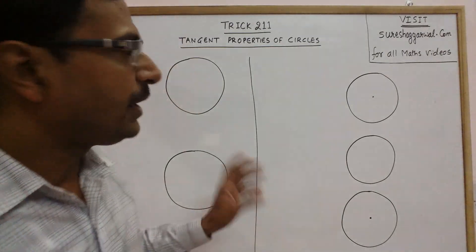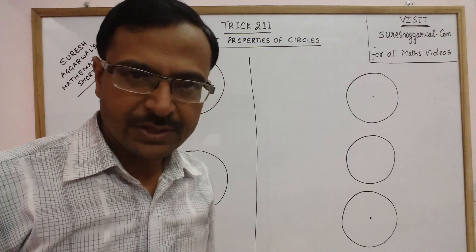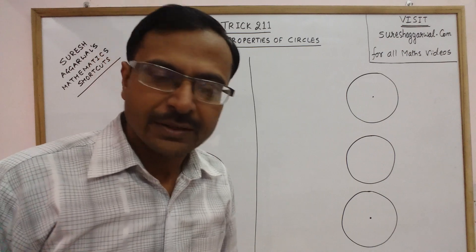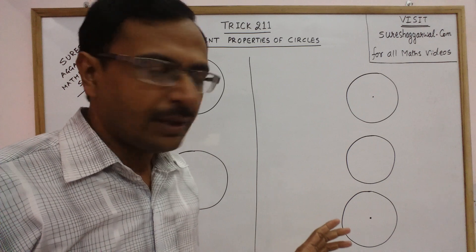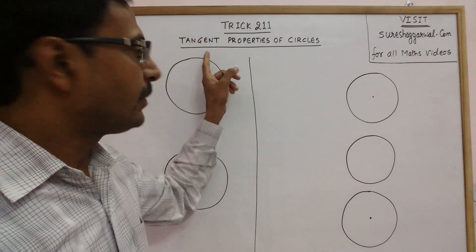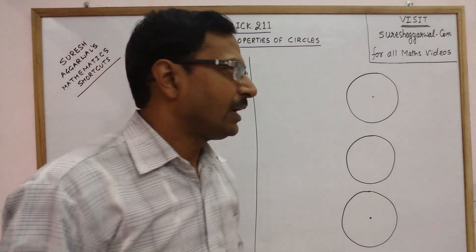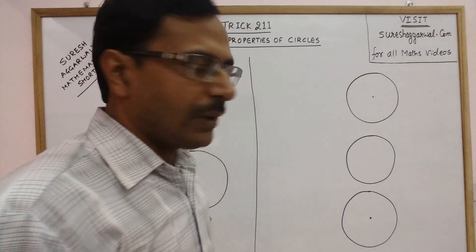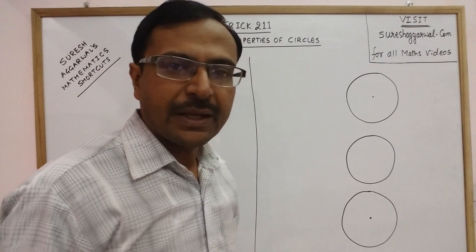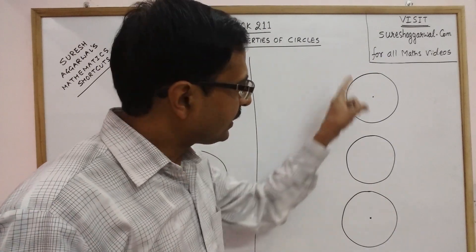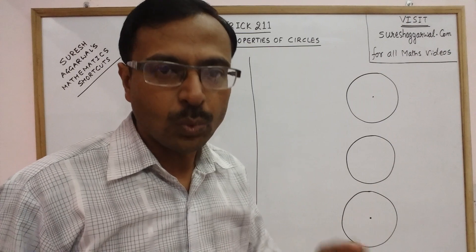Hello dear friends, in trick number 2, double 1, we shall continue our series of tricks on geometry. This time we are going to try and understand some tangent properties of a circle. Now as you all must be knowing, a tangent is basically a line which touches the circle at just one point.